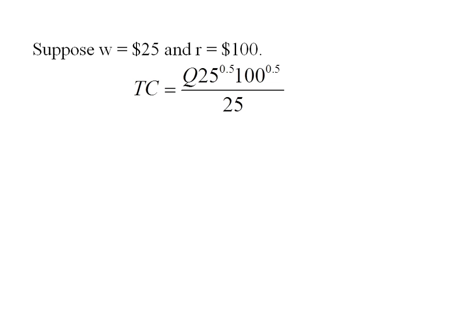All I need to do is plug into my calculator 25 to the 0.5 and 100 to the 0.5. I've got that 25 in the denominator and it simplifies nicely to 2Q.